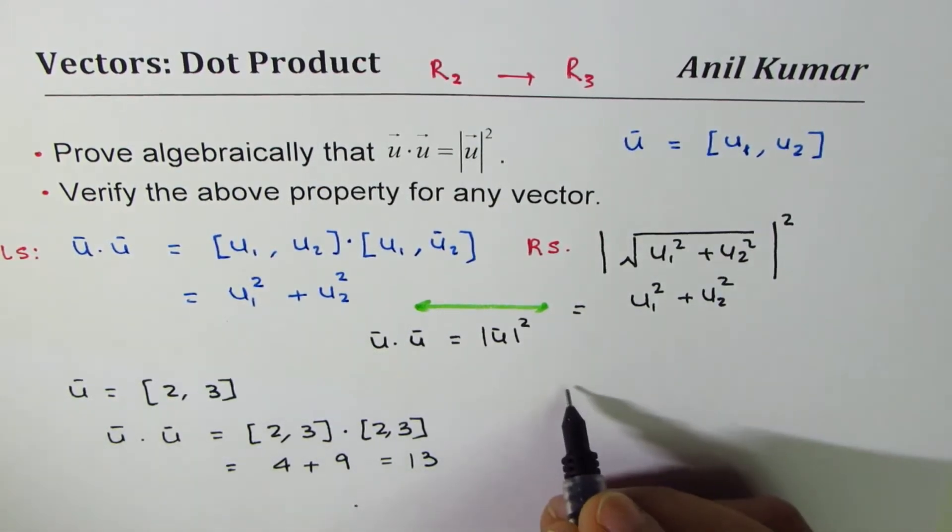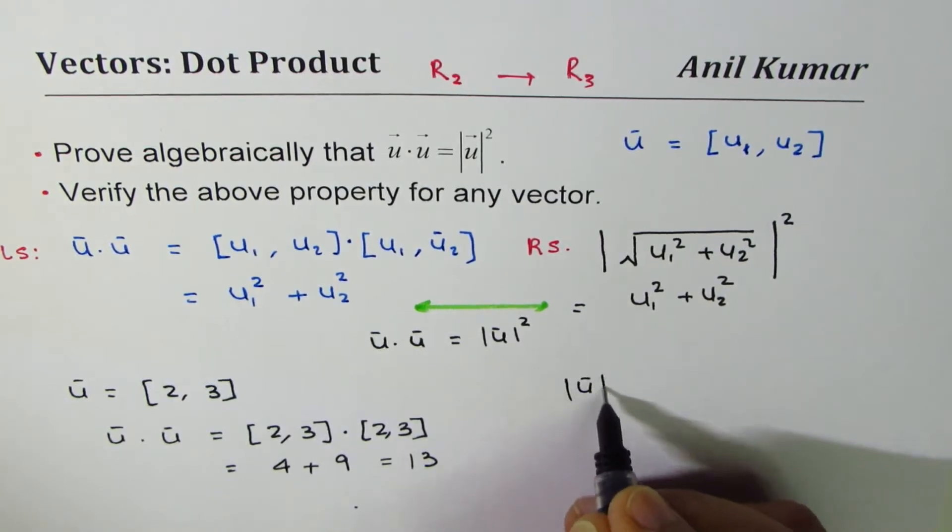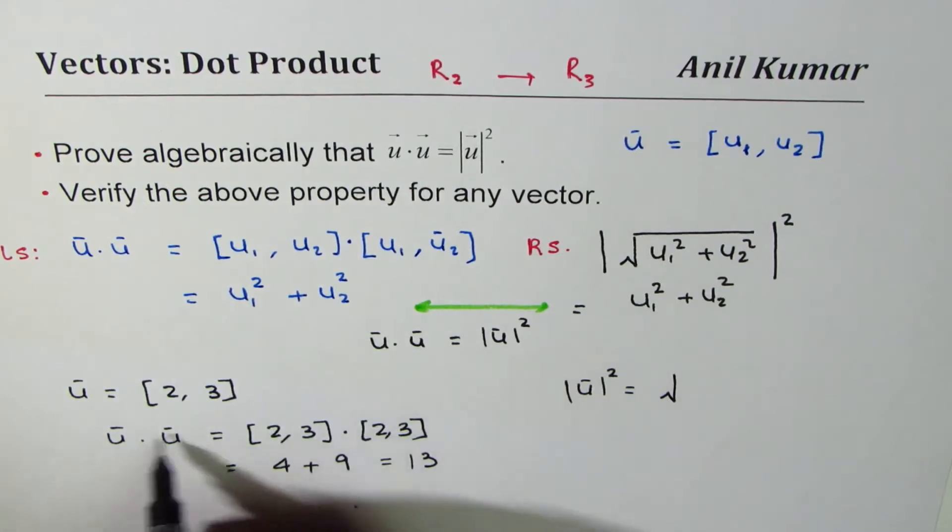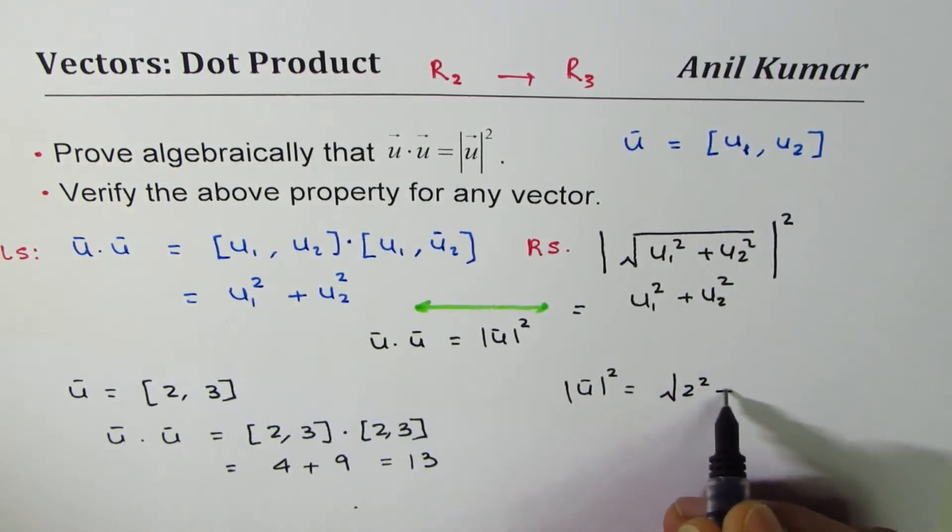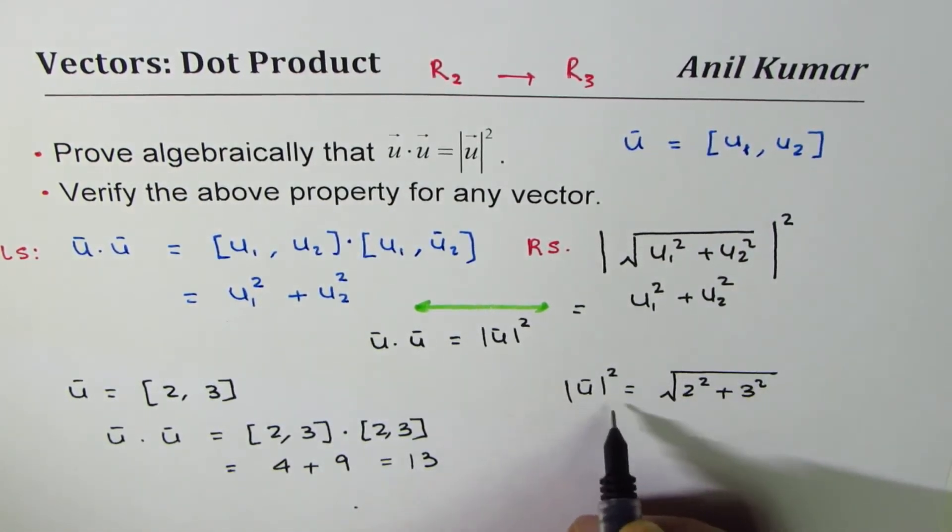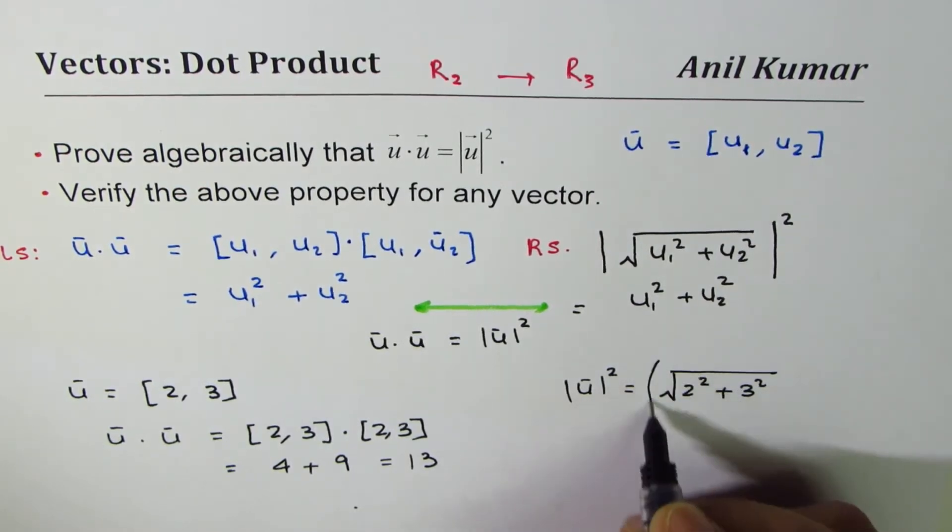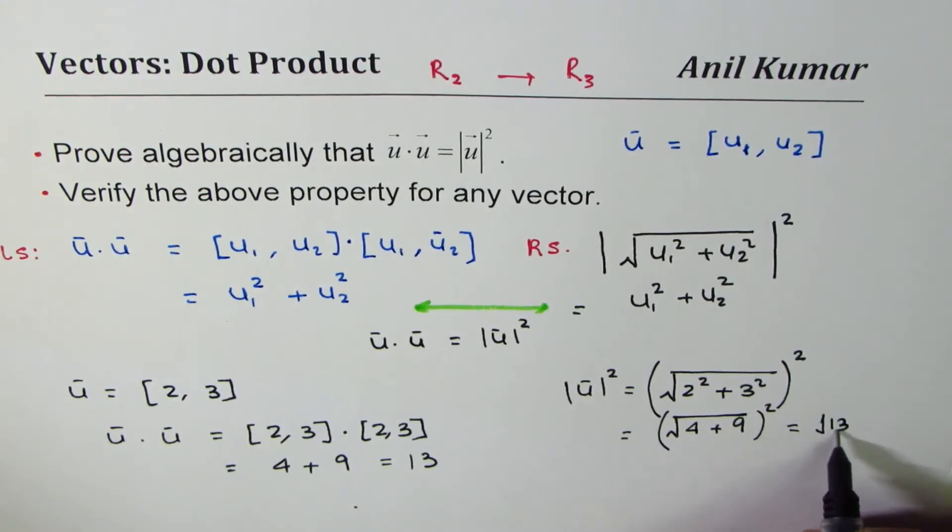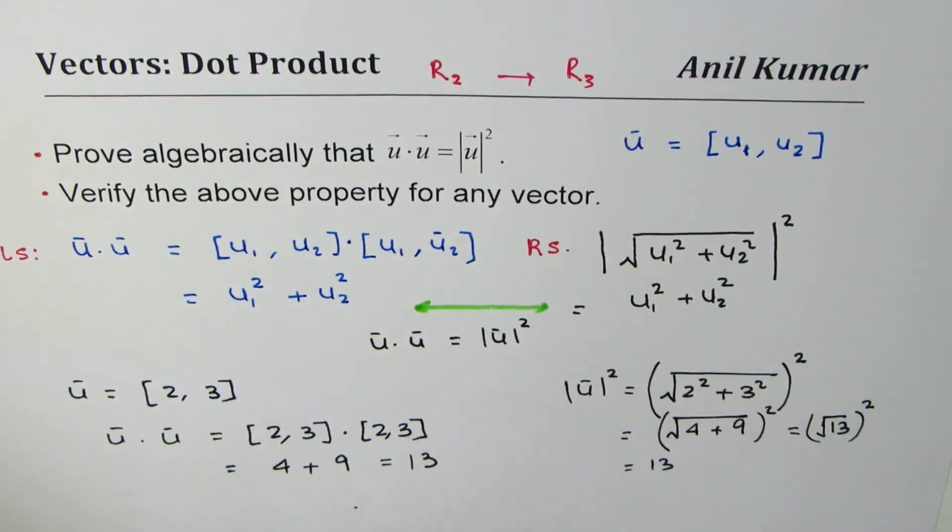How about the magnitude squared? Let's calculate magnitude squared, which is square root of 2 squared plus 3 squared. That's the magnitude, and then we'll square this. So the square root of 2 squared is 4, 3 squared is 9, and then we square it, and that gives us square root of 13 squared, which is also 13.